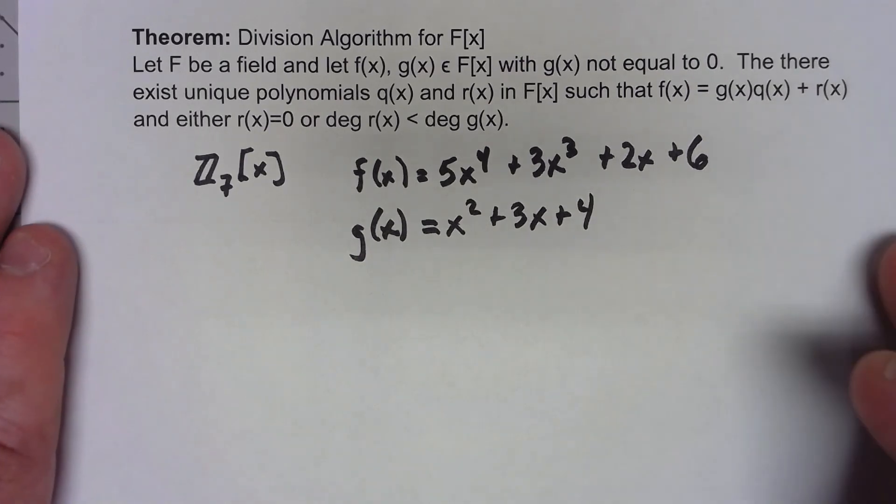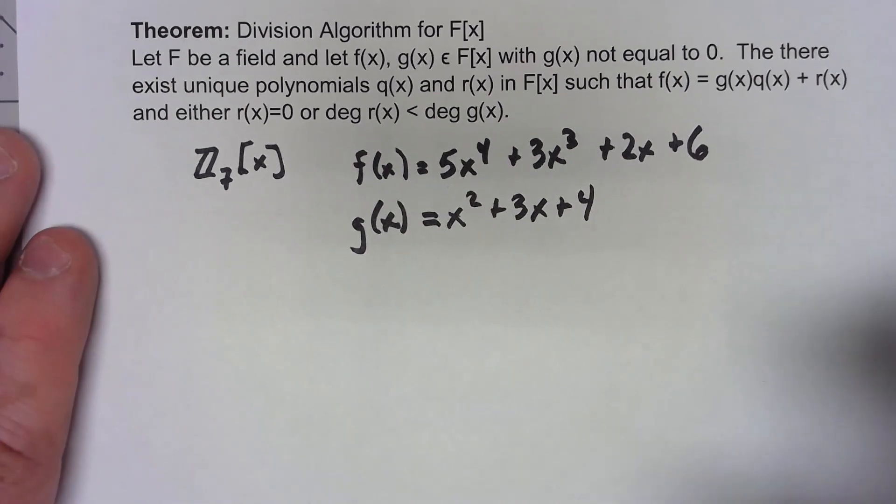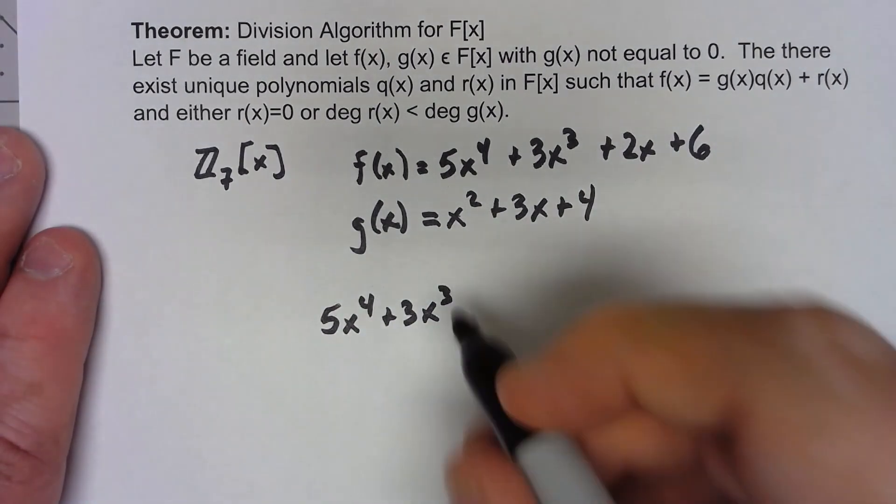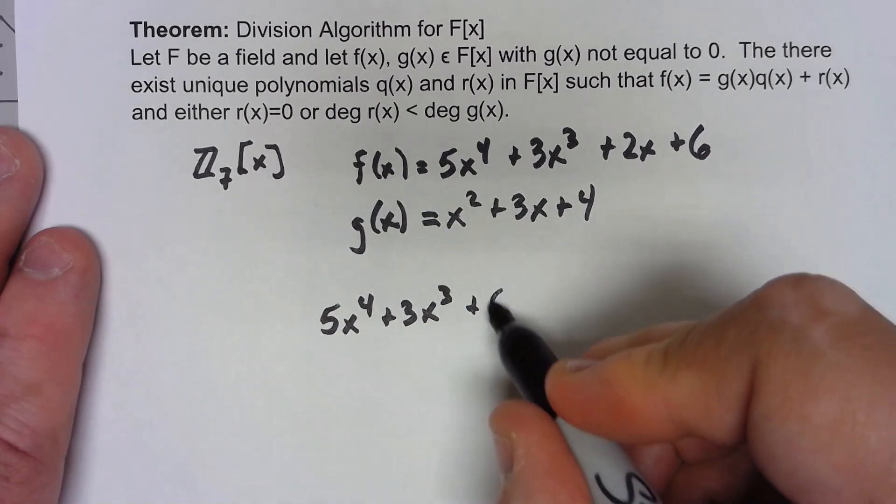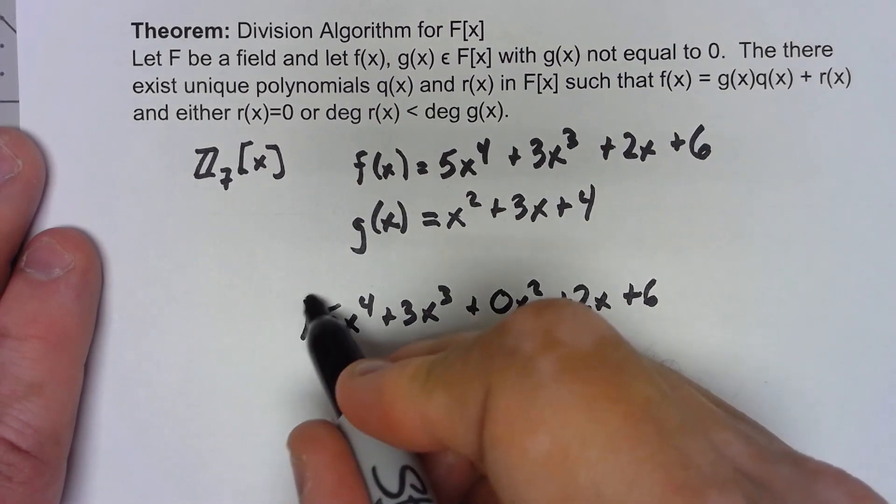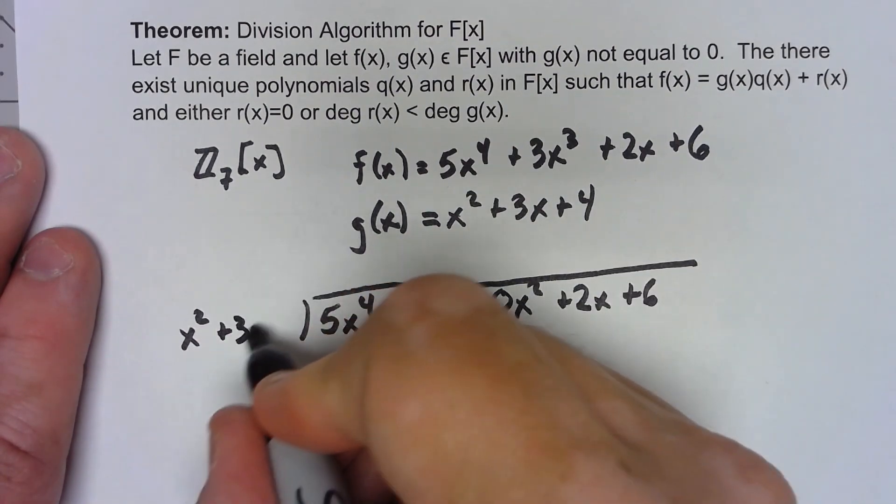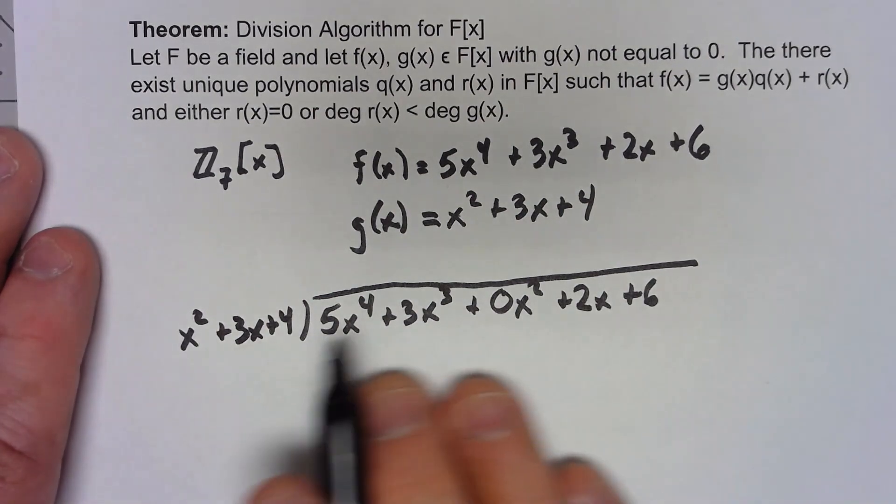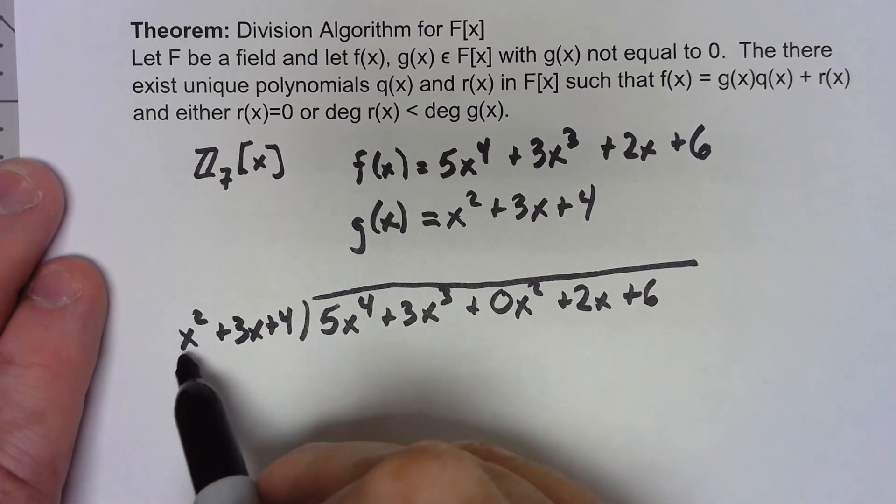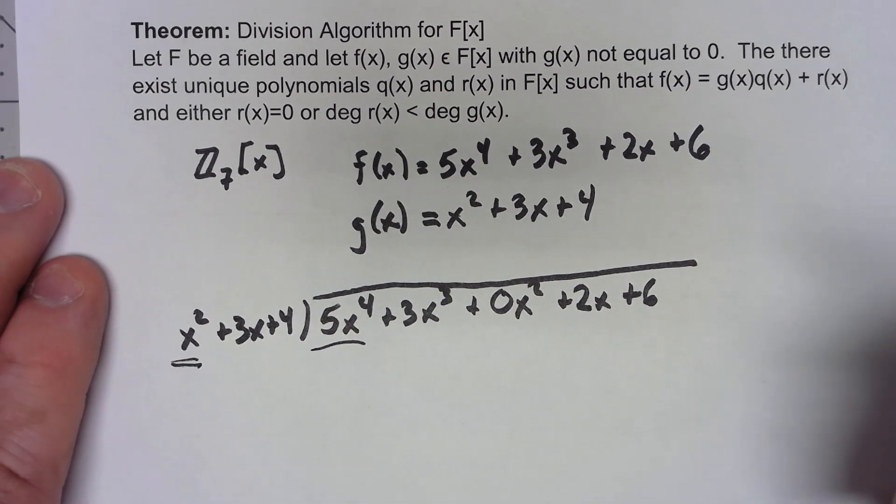Really this whole thing, the whole constructive way we're going to do this is just long division. So what I'm going to do is I'm going to say I've got the 5x to the fourth plus 3x cubed. To make sure everything lines up we're going to put in a 0x squared plus 2x plus 6, and we're going to divide that by x squared plus 3x plus 4. Like I said, this is basically just long division. When I figure out what goes on top, I'm going to be looking at this thing, just the first term and saying that first term times what gives me the first term here.